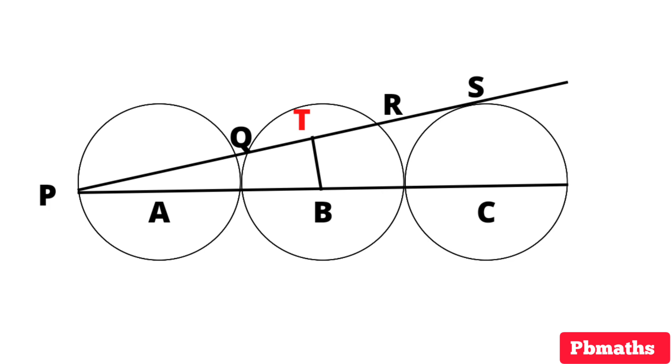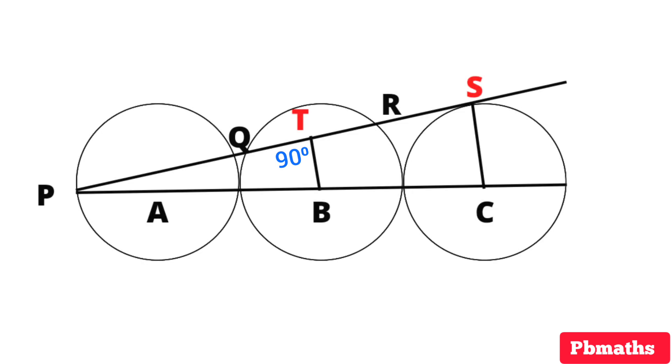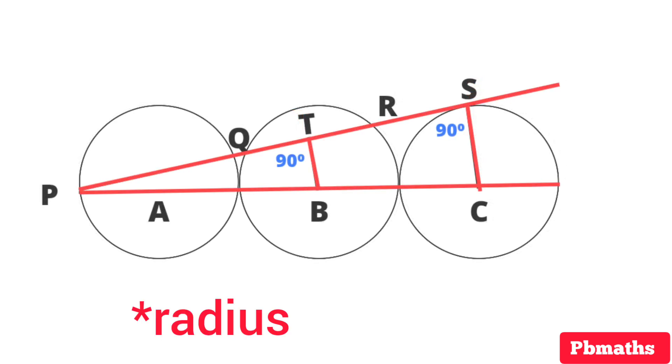So we can say that angle PTB equals 90 degrees. It is also given that PS is tangent to the third circle. Let's join SC in the third circle. Now angle PSC is also equals to 90 degrees, because tangent always makes right angle with the radii.